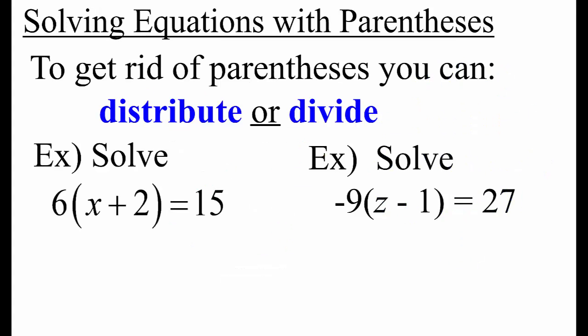We can distribute or divide. On the first example, let's distribute. 6 times x is 6x. 6 times 2 is 12. We undo add 12 by subtracting 12.